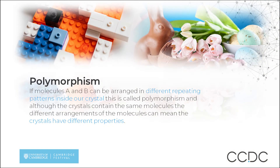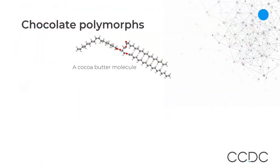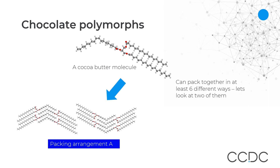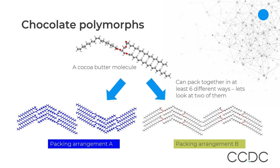So what is polymorphism? Let us imagine we have a crystal made up of smaller molecules A and B. If molecules A and B can be arranged in different repeating patterns inside our crystal, this is called polymorphism, and although the crystals contain the same molecules, the different arrangements of these molecules can mean the crystals have different properties. Chocolate is a compound that exhibits polymorphism because cocoa butter molecules can arrange themselves in at least six different ways in a crystal.